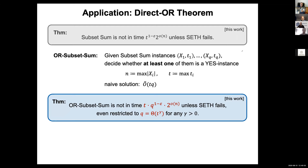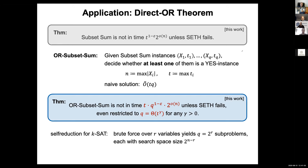To prove such a lower bound for a problem with many instances, the typical way is to use self-reduction. Let's look at the satisfiability problem for a moment.